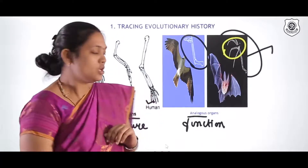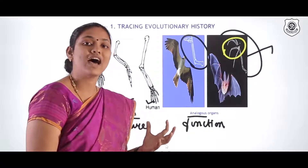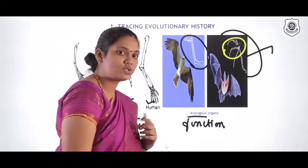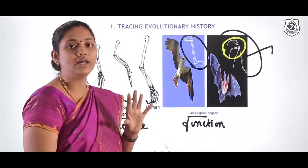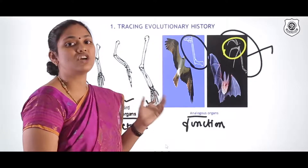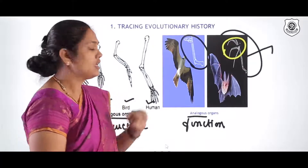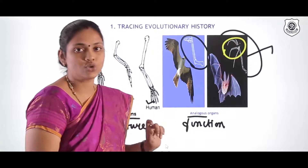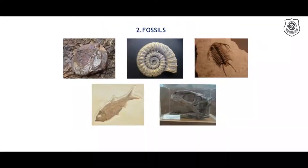From homologous organs you could conclude that all vertebrates might have originated from a common ancestor. In case of analogous structures, though they look structurally similar from outside, they may not be similar internally — they might have different structures which converged to do the same function. Bats use wings to fly, the same as birds, but they are structurally distinct.